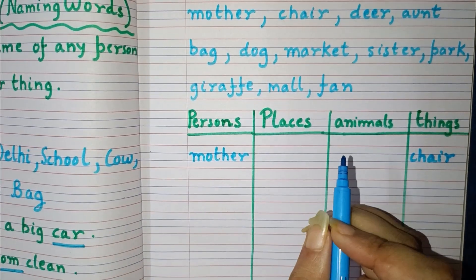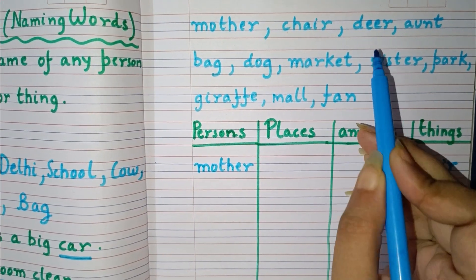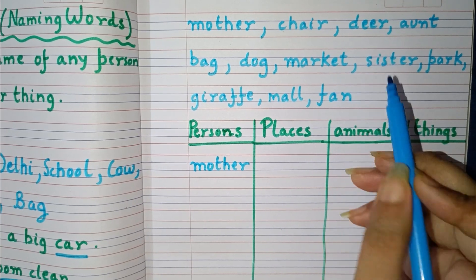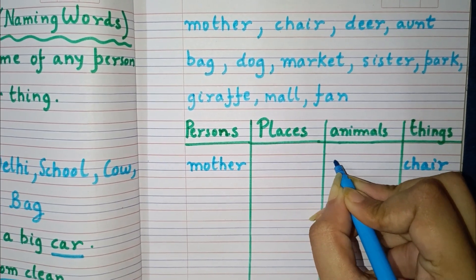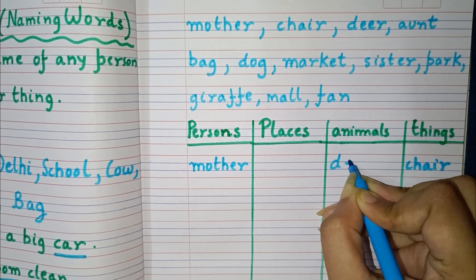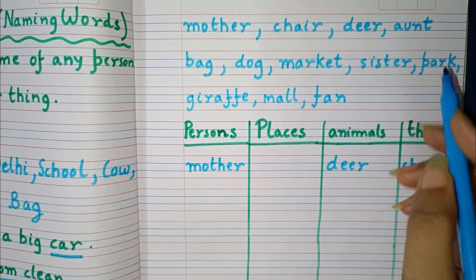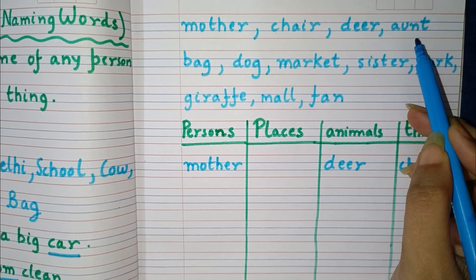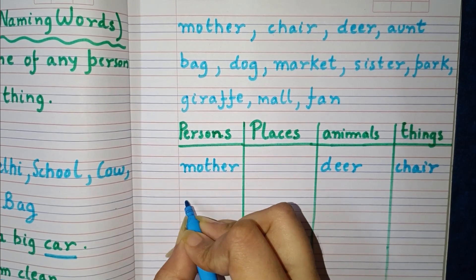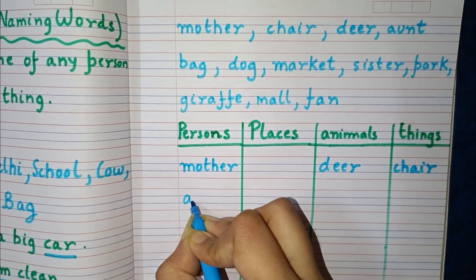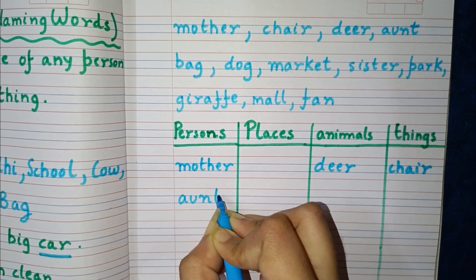Next is deer. Deer is an animal, so we will put it in the animals column — D-E-E-R, deer. Next is aunt. Aunt is a person, so we will write it in the persons column — A-U-N-T, aunt.